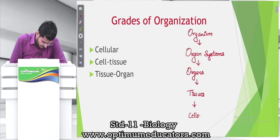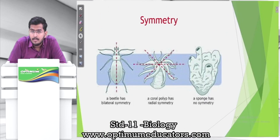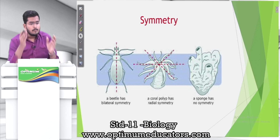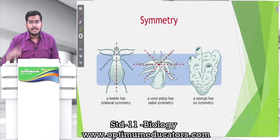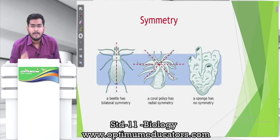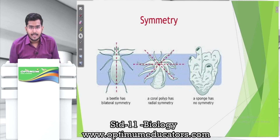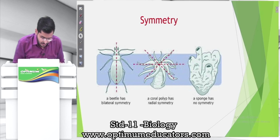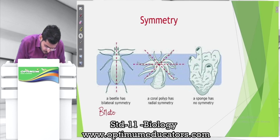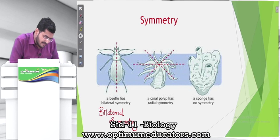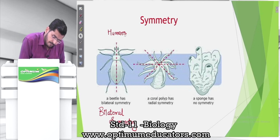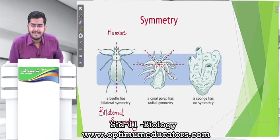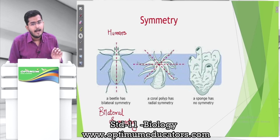The second criteria is symmetry. Some organisms cannot be cut along any axis to yield equal halves — these are asymmetrical. In humans, you can cut along the central axis and get two equal halves — this is bilateral symmetry. If you cut an organism along any axis or plane and get two equal halves, that is radial symmetry, seen in organisms like hydra and starfish.